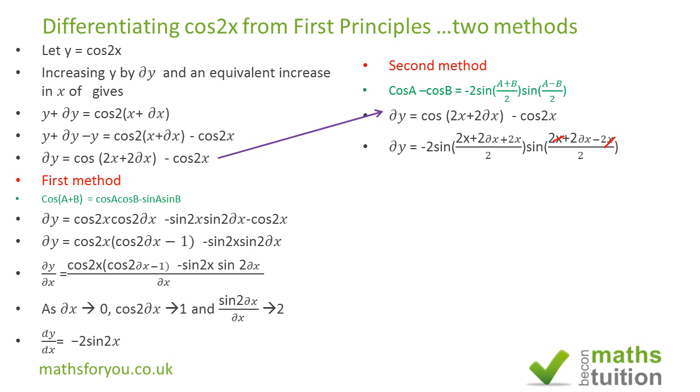Now the 2x will cancel out. So the next line we have minus 2 sine 2x plus 2 delta x plus 2x times 2 delta x over 2. If we simplify the whole thing, we end up with that there. So now the next line should read delta y is equal to minus 2 sine 2x plus delta x, and then we've got delta x left over there and sine delta x there.